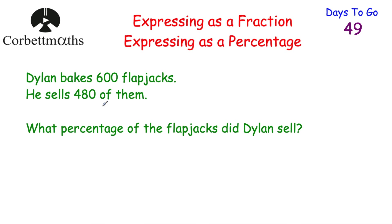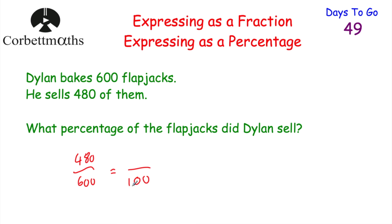Next question: Dylan bakes 600 flapjacks and he sells 480 of them. What percentage of the flapjacks did Dylan sell? Feel free to press pause now. Express as a fraction first: 480 over 600. To get an equivalent fraction with 100 on the denominator, divide by 6: 600 divided by 6 is 100, and 480 divided by 6 is 80. So that's 80 out of 100, or 80%. He sold 80% of the flapjacks. If you got that, well done.